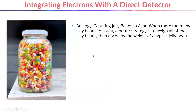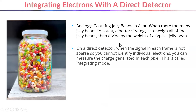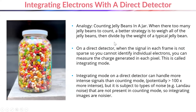What if there are so many sweets in a jar that it's not practical to count all of them manually? In this scenario, a better strategy would be to weigh all of the sweets, and then divide by the weight of a typical sweet to figure out the number. Similarly with direct detectors, if there's too intense a signal incident on the detector so that you can't identify individual electrons, you can measure the charge generated by those electrons in each pixel. This is what we call integrating mode, and it is a more traditional way of running the detectors. Integrating mode can handle much more intense signals than counting mode, potentially up to 100 times more intense.